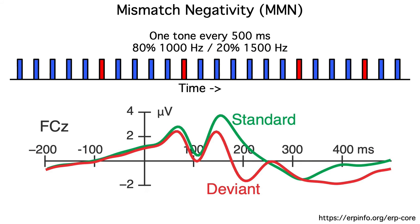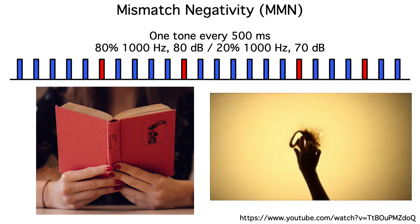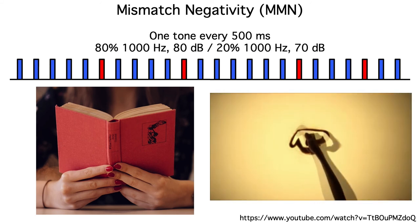You can get an MMN with virtually any type of physical deviance that someone can perceive. The data shown here are from the ERP CORE MMN task, where intensity deviants were used. The MMN doesn't require that the subject is performing a task — it's an automatic response to the mismatch. In fact, many researchers record the MMN while subjects read a book, and in the ERP CORE, subjects watched a silent movie while the tones were playing.